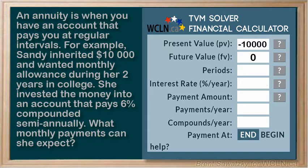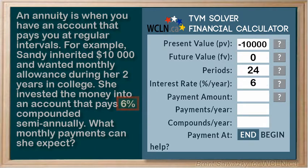The periods — we're talking about two years and 12 payments per year, so the periods is 24. The interest rate is 6%. The payment amount is what we're figuring out, so we'll skip that. We have 12 payments per year, and we're told that we have two compounds per year — semi-annual.